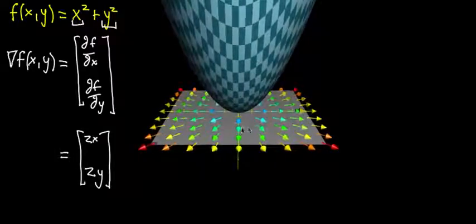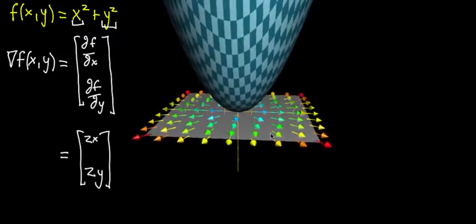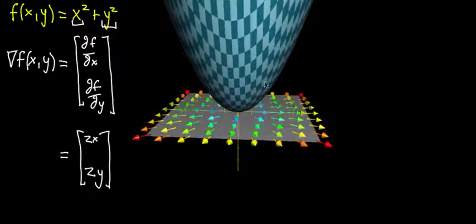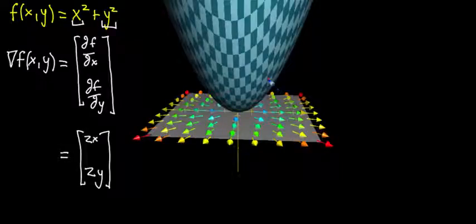So what does this have to do with the graph of the function? There's actually a really cool interpretation. So imagine that you are just walking along this graph. You're a hiker and this is a mountain. And you picture yourself at any old point on this graph. Let's say you're sitting at a point like this.